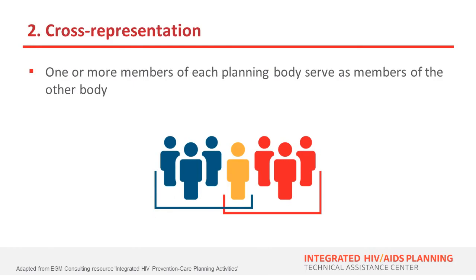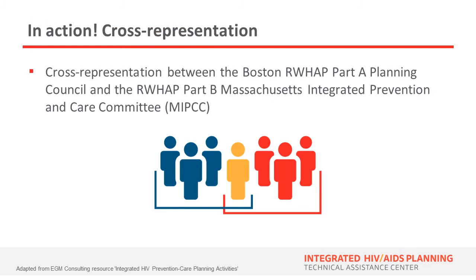The second model is cross-representation, where one or more members of each planning body actually serve as members of the other body. That person can act as a liaison and facilitate communication. In practice, this might take shape as an HIV prevention group representative or a Ryan White Part B representative serving as a member on a Ryan White Part A planning council. In Massachusetts, for example, they have established cross-representation between the Boston Ryan White Part A planning council and the Massachusetts integrated prevention and care committee.